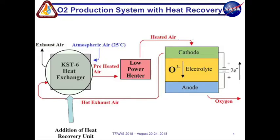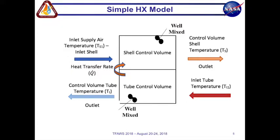Going on to the next slide we have a simple heat exchanger model for our heat recovery unit and our heat exchanger will consist of a shell and tube. We have atmospheric air going into the shell side whereas our exhaust air from our cathode from the O2 recovery unit will be in our tubes.